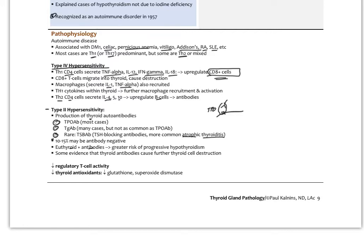Another important factor in autoimmune disease is downregulation of regulatory T cells — this is probably the most significant aspect, more than Th1 or Th2 dominance. There's also depletion of antioxidants like glutathione and superoxide dismutase inside the thyroid. One clinical strategy will be to upregulate glutathione production to help protect the thyroid from further damage.